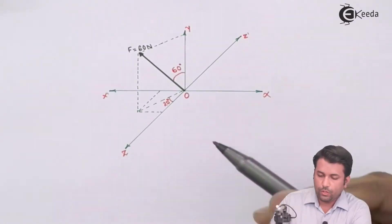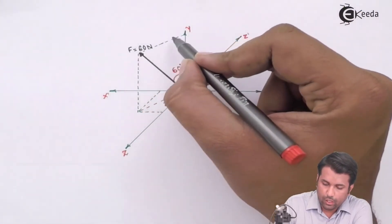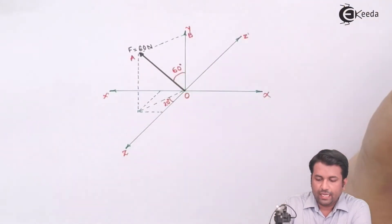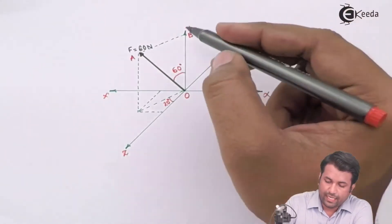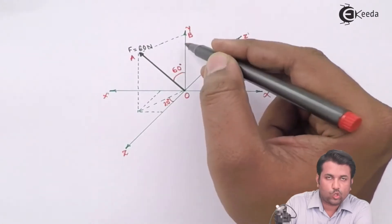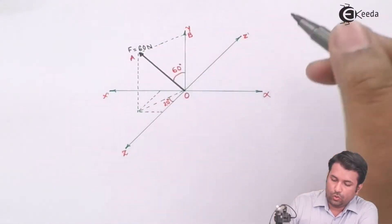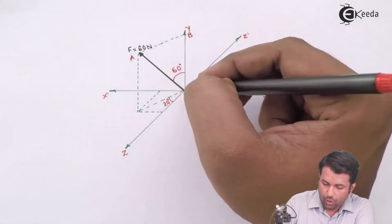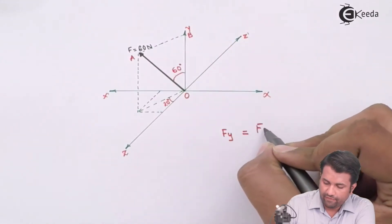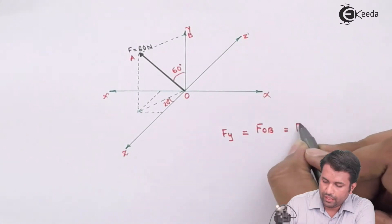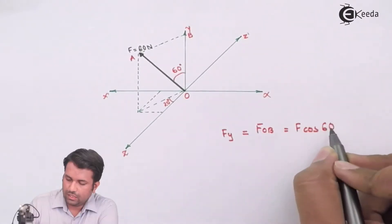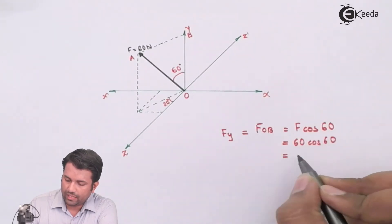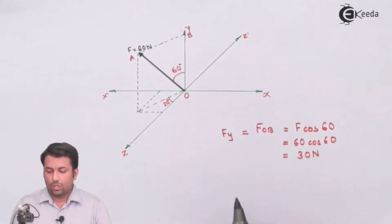In this figure, I've drawn a line from this point onto the y-axis. Naming the points O, A, and B, this becomes a right angle triangle. The component along OB is the cosine component of the force, so I can write: F_y = F_OB = F × cos(60°), which gives 30 Newtons. That is how I've found the y-component of this force.